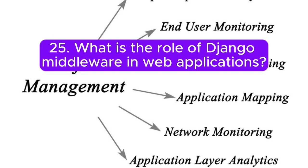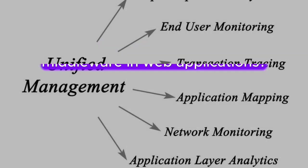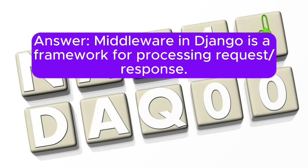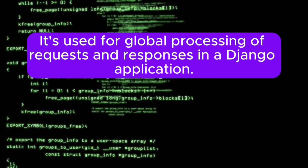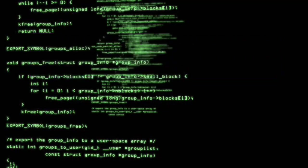Question 25: What is the role of Django middleware in web applications? Answer: Middleware in Django is a framework for processing requests or responses. It's used for global processing of requests and responses in a Django application.